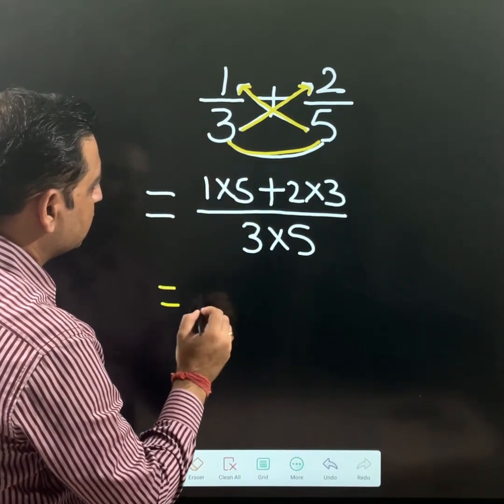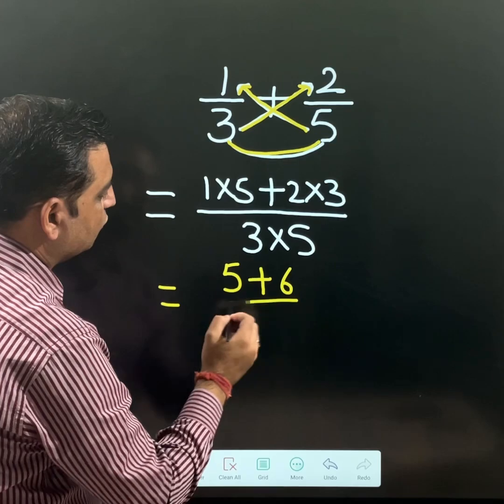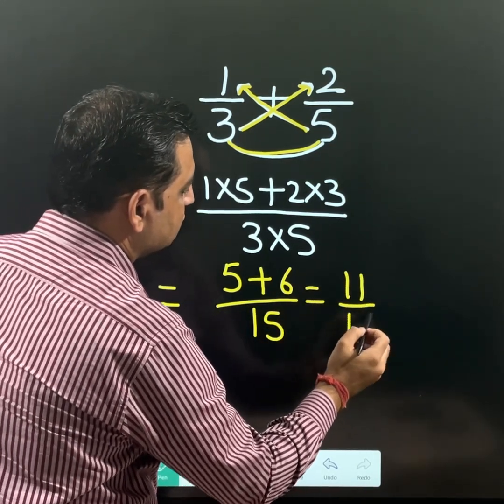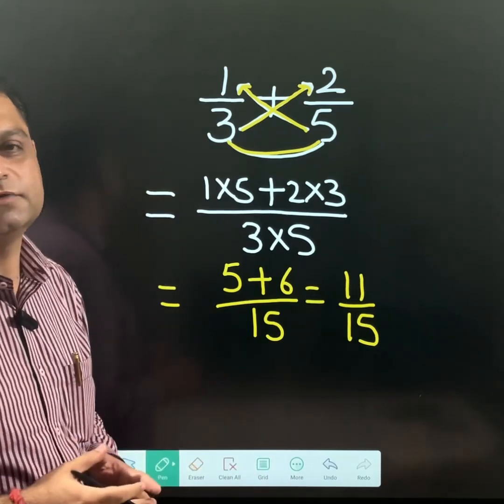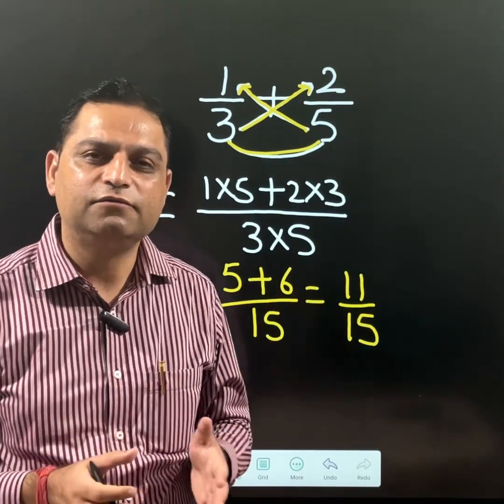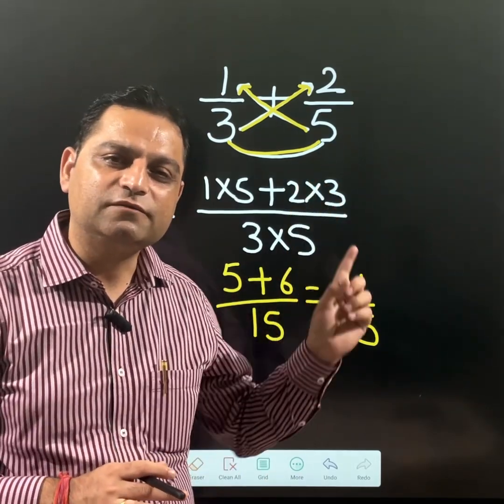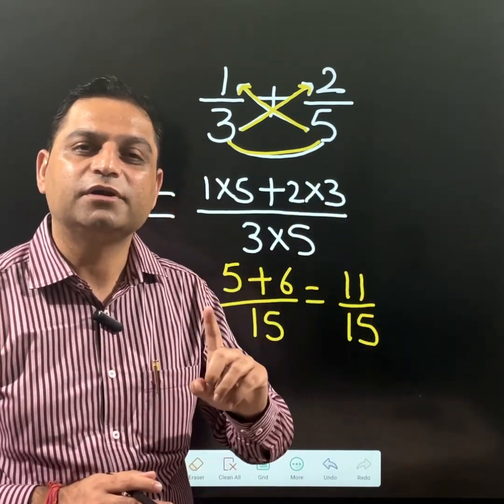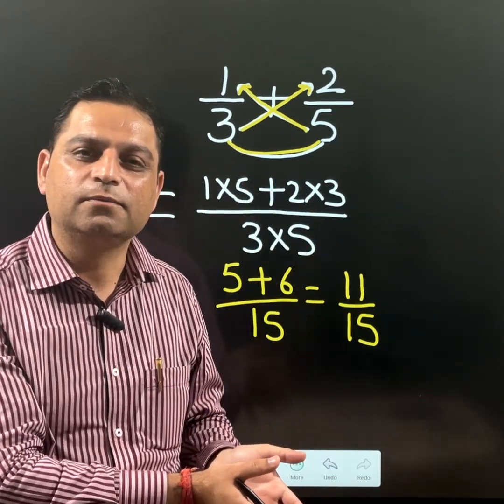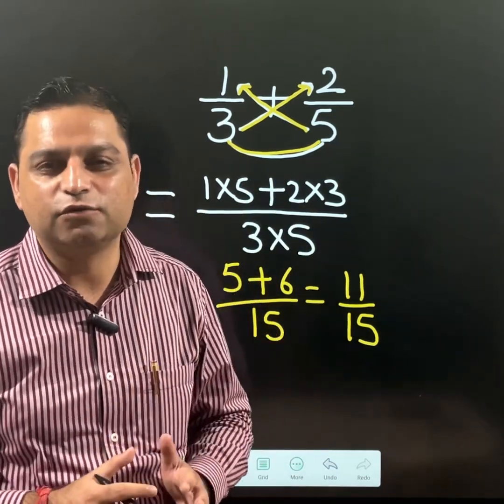And we will get 5 plus 6 over 15, that means the same answer 11 over 15 we will get. So whichever method you feel you are comfortable with. But I would especially tell you the first method which I told, that is the basic method, because one should know how the particular process is going on. So basics must be clear for all the students.